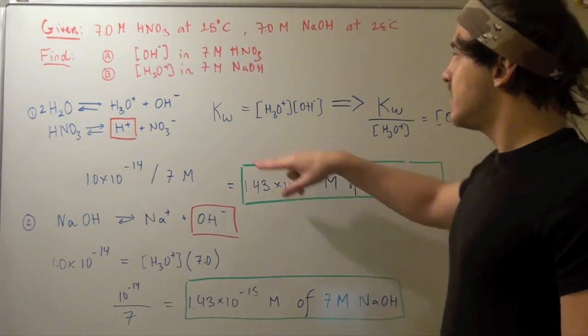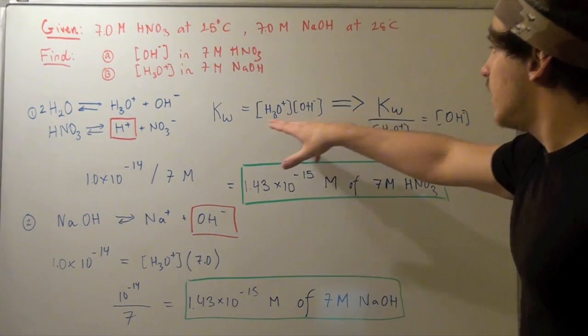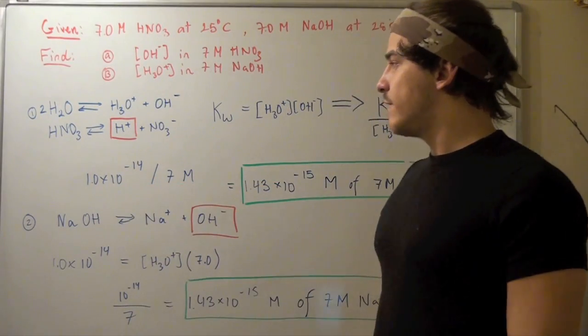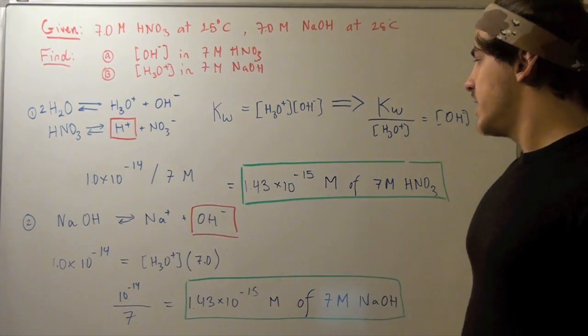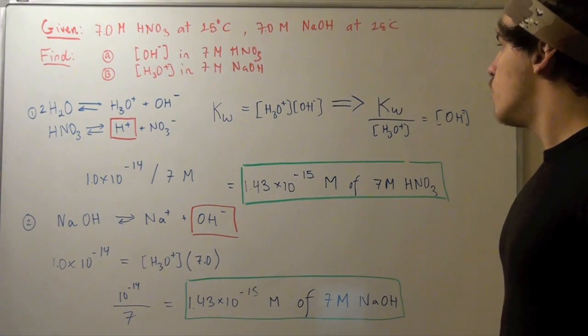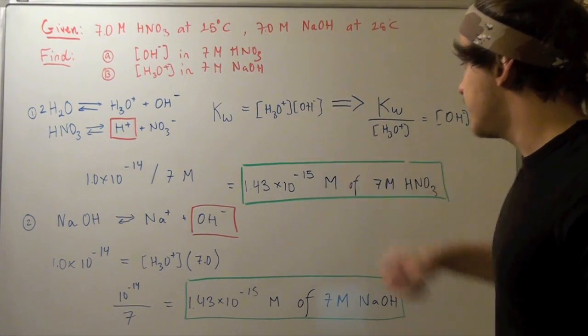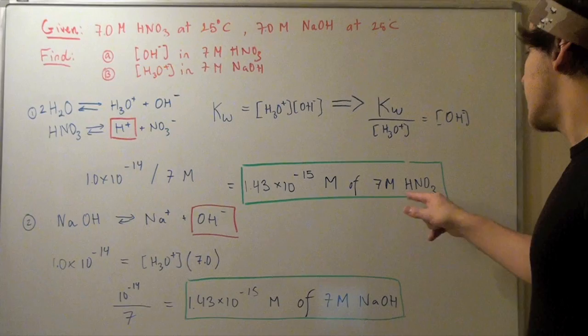We basically take our numbers, plug them in and find that 10 to the negative 14 divided by 7 gives you 1.43 times 10 to the negative 15 molar of hydroxide in 7 molar nitric acid solution.